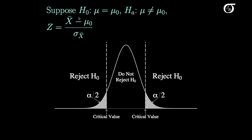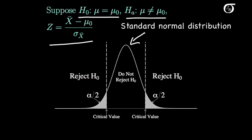Suppose we wish to test the null hypothesis that mu equals mu0 against the alternative hypothesis that mu is not equal to mu0, using the Z test statistic described earlier. If the null hypothesis is true, this test statistic will have a standard normal distribution, which I've drawn out here. If the null hypothesis is true, it is very unlikely to get Z values that are far out in the tails of the distribution, and so Z values far out in the tails give strong evidence against the null hypothesis.